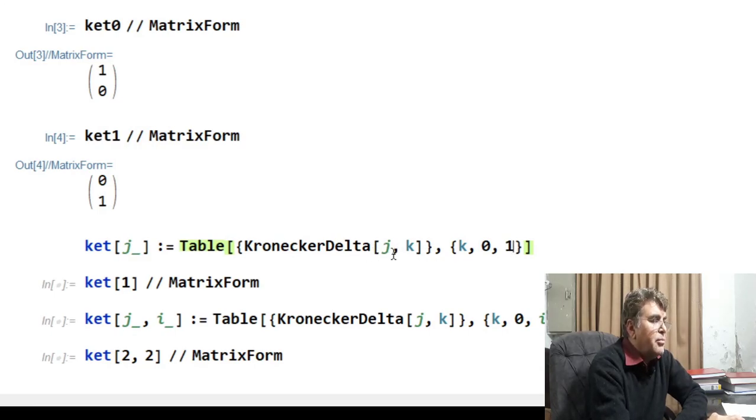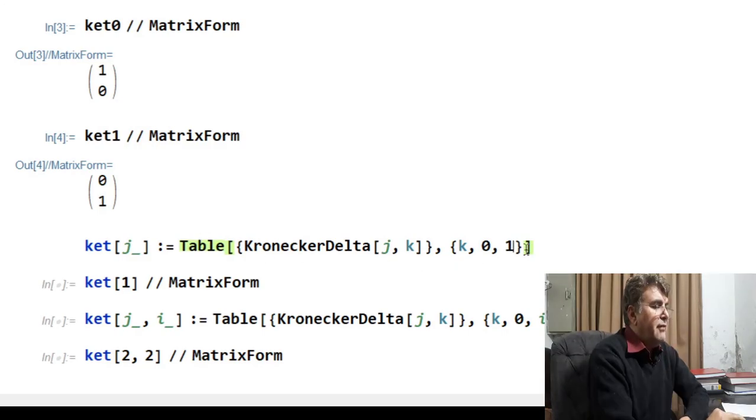Now this argument, this function will give me 1 for j equal to k and will give me 0 for j not equal to k. Where the k is a running parameter taking values from 0 to some upper value. If I set the upper limit of k to 1, this function then gives the basis vector of a two-dimensional Hilbert space.